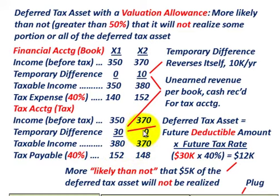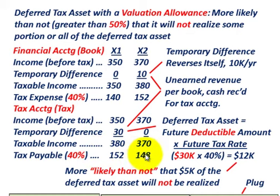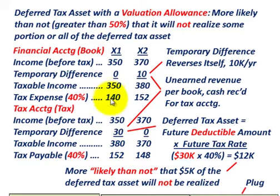For year X2, we have our income before taxes — taxable income times the 40% tax rate — giving us $148,000. So for tax accounting purposes, that's our taxes payable, the current amount payable. For financial accounting, we're going to do a plug based on our deferred tax asset and taxes payable.